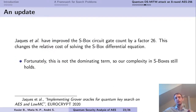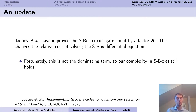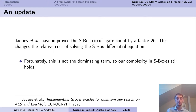I must make a small update regarding our paper. As I said, computing the exact cost of quantum circuits is complicated, and since we wrote this paper the cost — notably the cost of the S-box circuit — has been improved. This was a paper by Jaques et al. in 2020, with roughly a factor of 26 improvement in the gate count of the S-box circuit. In our paper this changes only the relative cost of solving the S-box differential equation, but it turns out this doesn't change our final result because it was not the dominating term in the complexity.